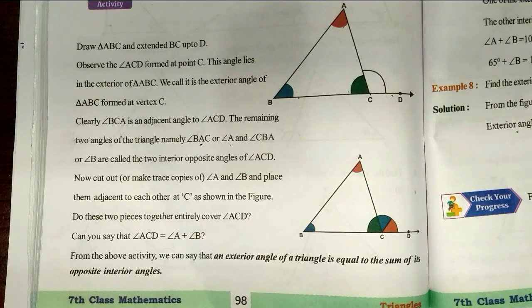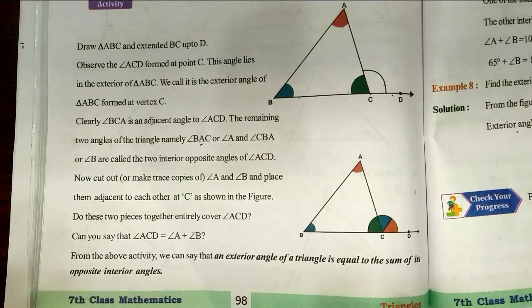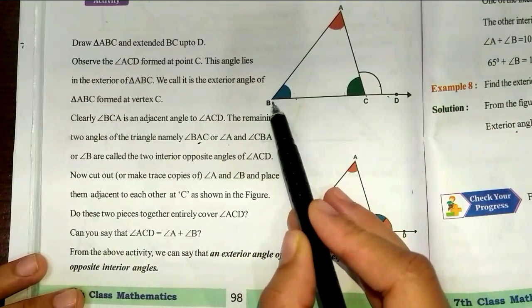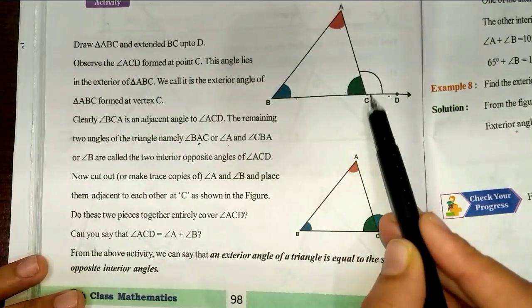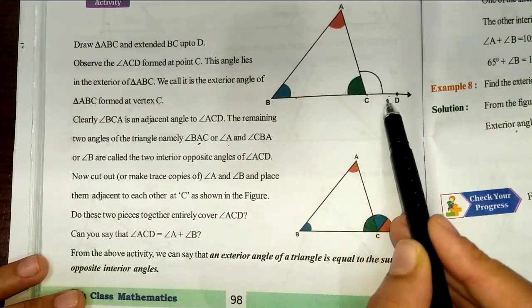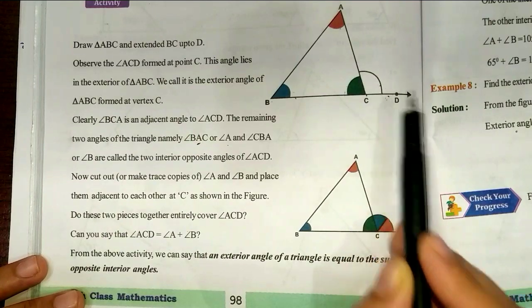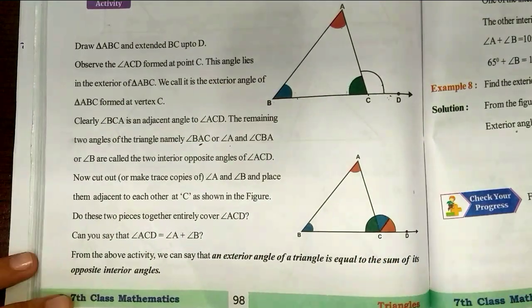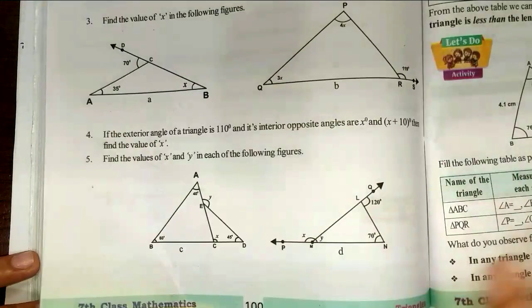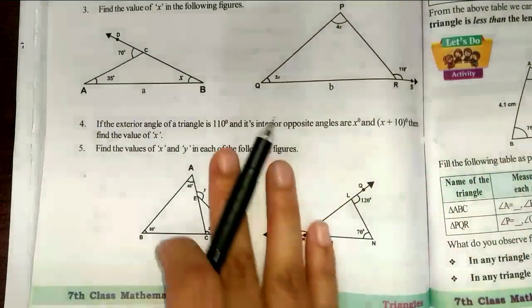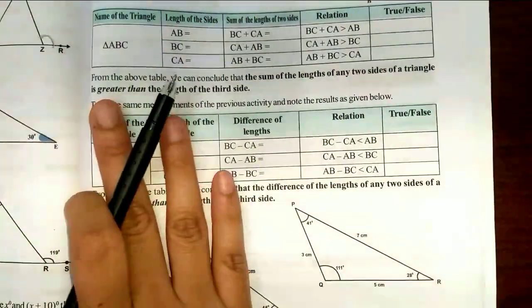You can sum the two angles in the same way. Angle A plus angle B equals angle ACD. The exterior angle of the triangle equals the sum of the two interior opposite angles. This is the same activity.